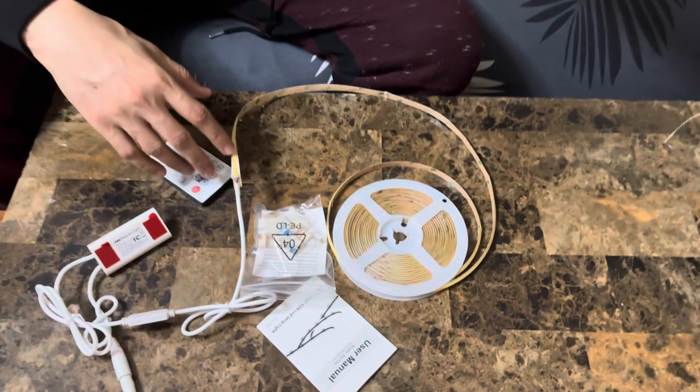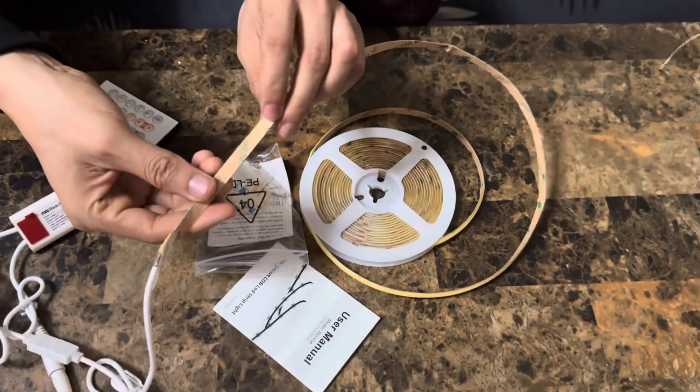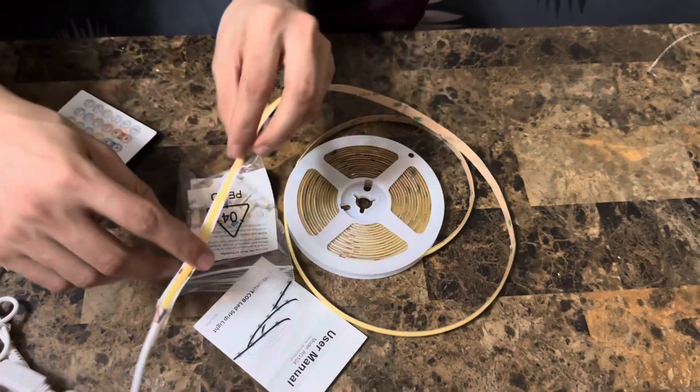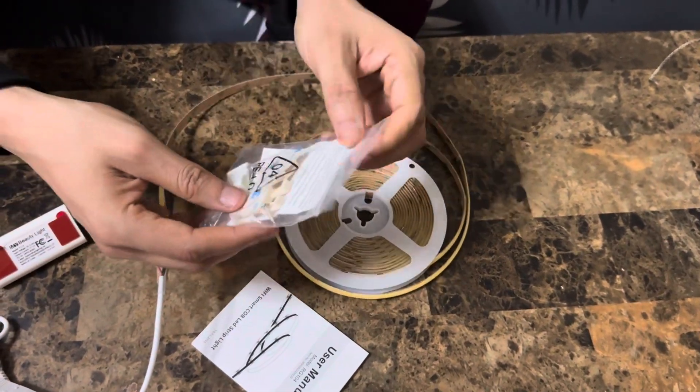Those are the lights itself, guys. The way it works is you have the stickers in the back and you can just stick them to any surface you want. They also give us those hooks.